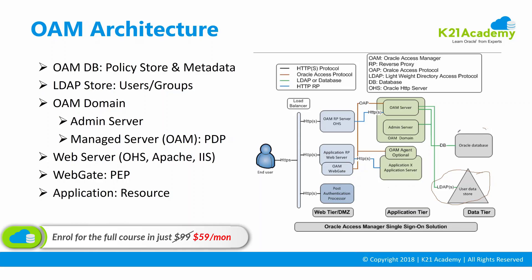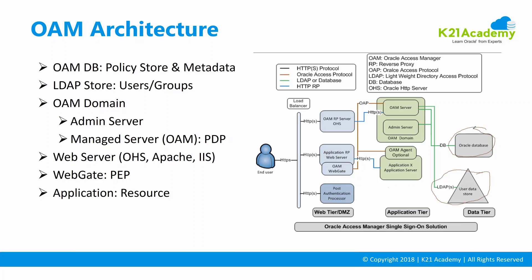The second component is Oracle Database. When you install Oracle Access Manager, its metadata, configurations, policies, session information, auditing, and more are stored in the database. We have a dedicated module covering all the various stores in Oracle Access Manager. Oracle Access Manager needs a database to store policies — which are rules that dictate how a URL is protected or public. You need to create a schema before you configure Oracle Access Manager.